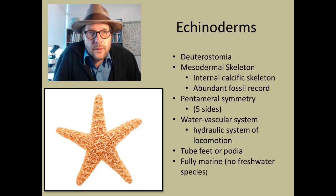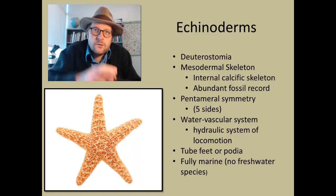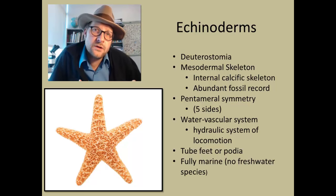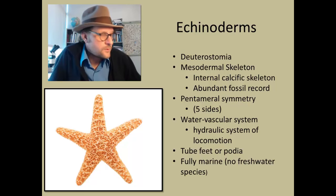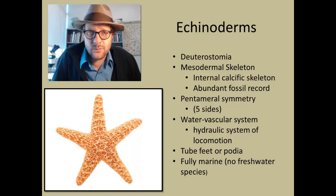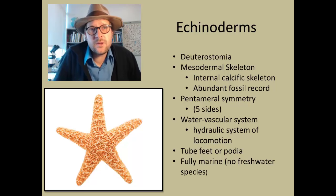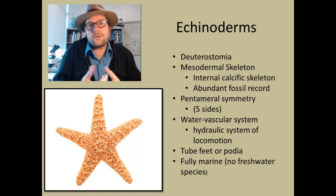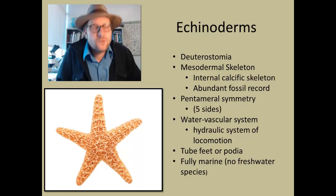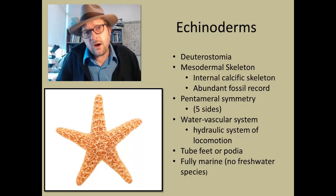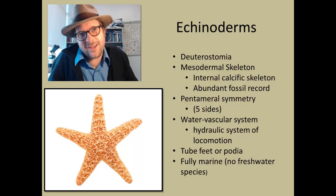These tube feet move back and forth, allowing echinoderms to crawl slowly across the ocean's surface. They are also incredibly strong for cracking open shelled organisms, and many echinoderms are significant predators on shelled organisms like bivalves and brachiopods. Because echinoderms have a calcitic skeleton, they are very common in the fossil record beginning in the Cambrian and become more diverse through time. Today, echinoderms are extremely diverse, with only two groups which are totally extinct.